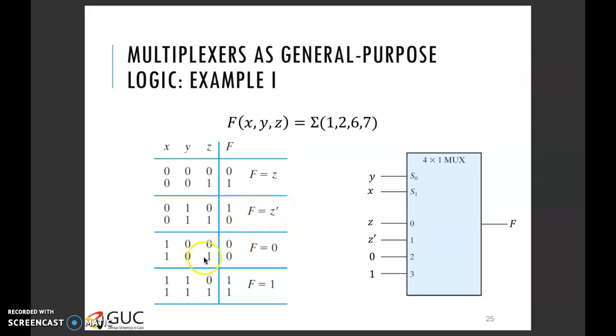Moving on for the next couple of rows, it's apparent that whatever values z takes on, f is always equal to 0. So you just write it down, f is equal to 0. And finally, for the last two rows, irrespective of the values z takes, f is always equal to 1. And thus you write down f is equal to 1.